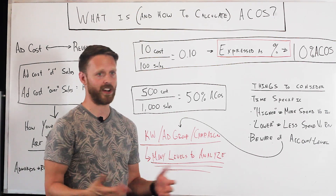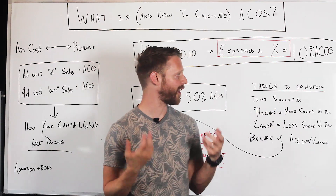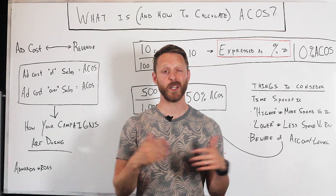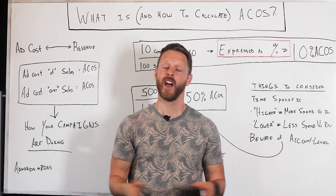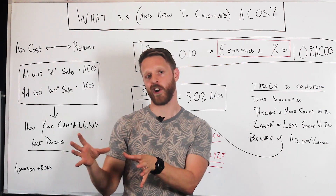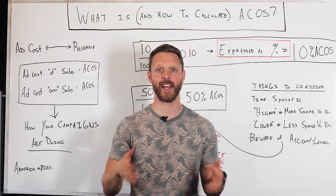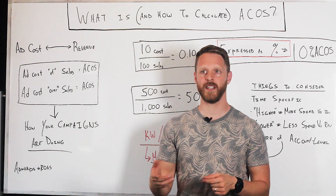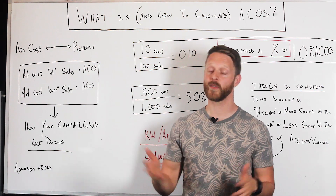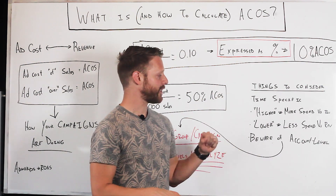Some quick things to consider: first, these are time-specific. It's very likely that a keyword, campaign, or even the whole account performs at one ACoS one month and then has a totally different ACoS the next month. So it's always important to know what time period you're looking at — it might be lifetime ACoS, this quarter, a holiday season, this month, or even this week.